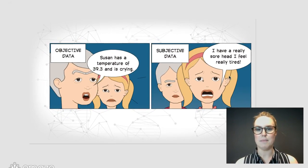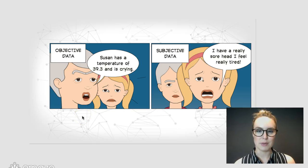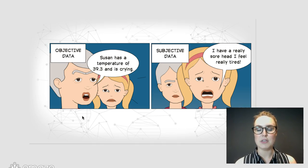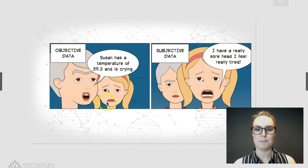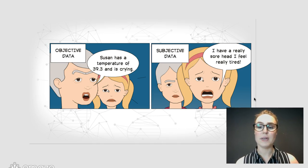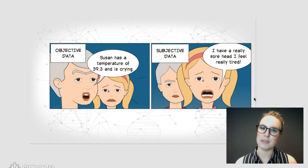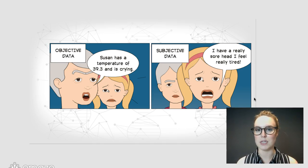Here's a picture to illustrate this. For objective data, the researcher can say Susan has a temperature of 39.3 and she's crying — collecting a temperature and observing a behavior. On the other hand, for subjective data, Susan herself says 'I have a really sore head and I feel tired.' There are no objective measures there; the researcher can't verify that, and there's no way of knowing if Susan is lying with just subjective data.